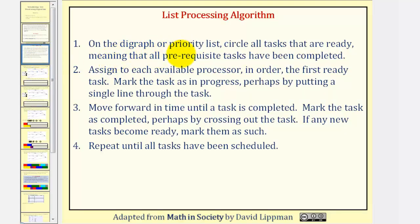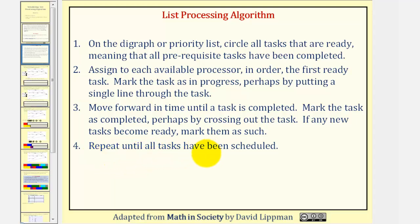Step one: on the digraph or priority list, we want to circle all tasks that are ready, meaning that all prerequisite tasks have been completed. Step two: we'll assign to each available processor, in order, the first ready task. We'll mark the task as in progress, perhaps by putting a single line through the task. Step three: we'll move forward in time until a task is completed. Mark the task as completed, perhaps by crossing out the task. And if any new tasks become ready, we'll mark them as ready. Step four: we repeat until all tasks have been scheduled.